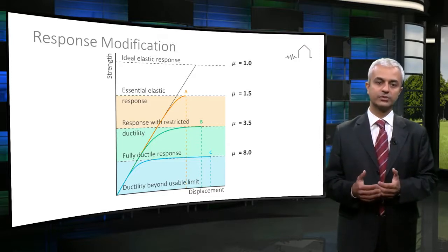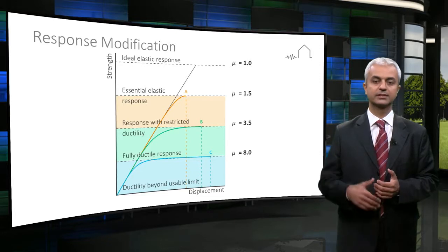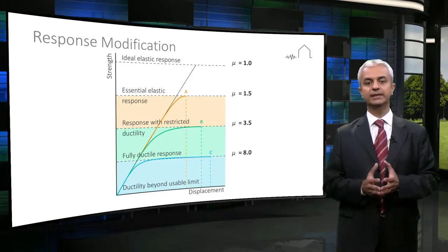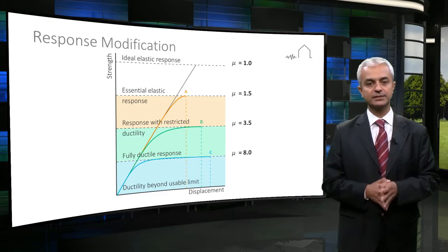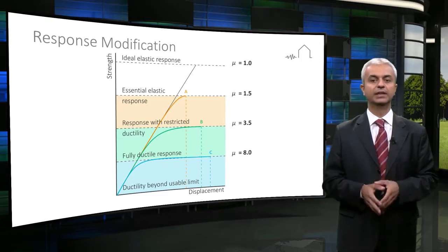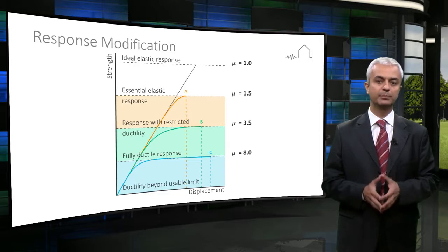Therefore, seismic design codes are also proposing simplified procedures as an alternative which reflect the inelastic behavior in linear analysis. These methods are using a factor called response modification or behavior factor.